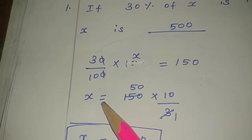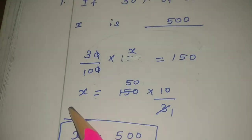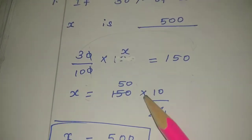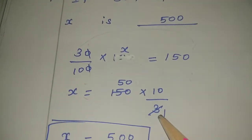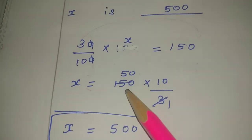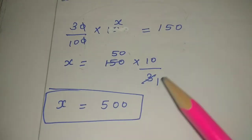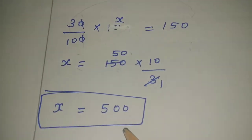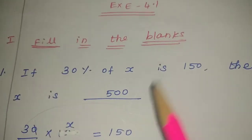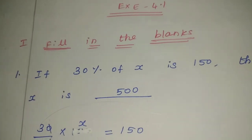So, 3 by 10 becomes 10 by 3. x is equal to 150 into 10 by 3. Using the 3 times table: 3 times 1 is 3, 3 times 5 is 15 — so 50 into 10 equals 500. Therefore, the answer is x equals 500. Clear.